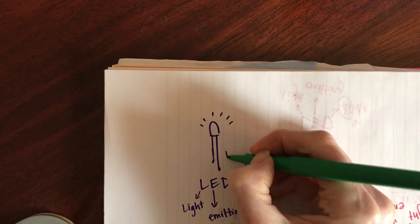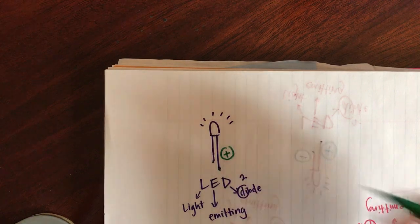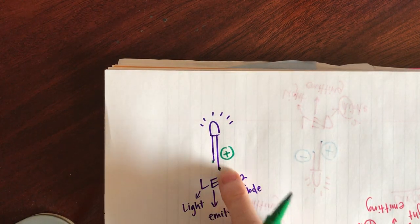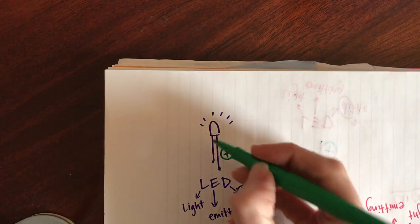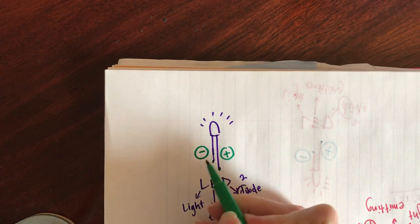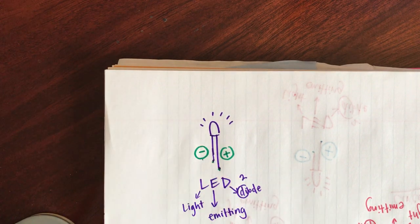So one of those legs is going to be longer than the other one. That long leg is what we will call our positive leg. So go ahead and say that with me, this is the positive leg. And then this short one is our negative leg. So go ahead and say that with me, the negative leg.